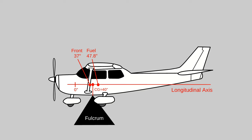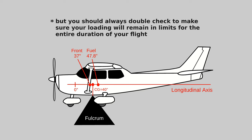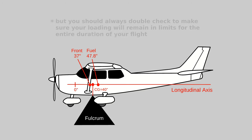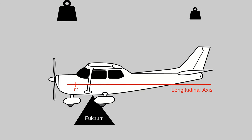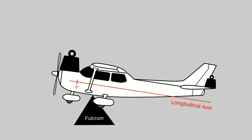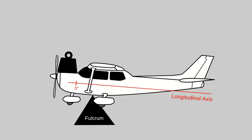Notice that the front seats and fuel tanks are positioned close to the aircraft's empty CG. This is nice because it means that the weight of the pilot and co-pilot, and also the amount of remaining fuel, don't significantly impact the airplane's CG and associated handling characteristics. Weights loaded far away from the CG move it more significantly than weights loaded closer.